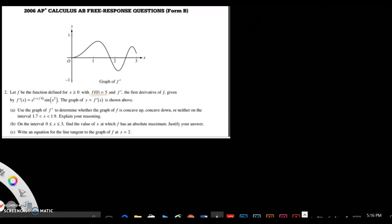Use a graph of f prime to determine whether the graph of f is concave up, concave down, or neither on the interval x is between 1.7 and 1.9. Explain your reasoning.